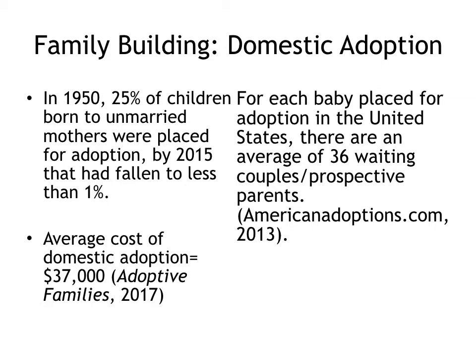In 1950, 25% of children born to unmarried mothers were placed for adoption. By 2015, that had fallen to less than 1%. So even though something like 40% of all children in the United States are now born to unmarried women, the vast majority of the time those women will opt to keep their children themselves. For each baby placed for adoption in the United States, there are an estimated 36 waiting couples or prospective parents. For this reason, domestic adoption is expensive and the waiting lists can be quite long — in many cases, years.